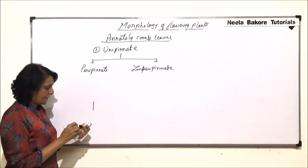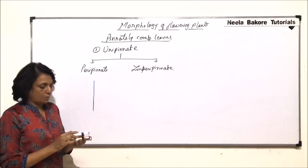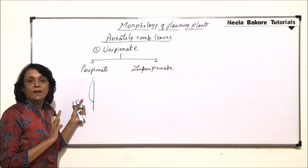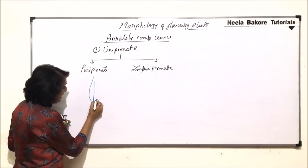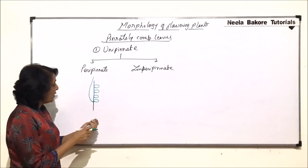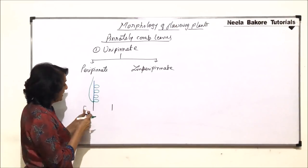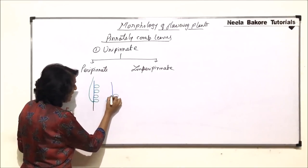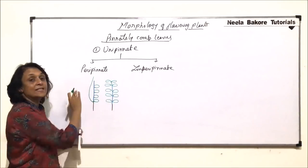So let us see — this is the petiole and this is the midrib. We will now start calling this midrib as the rachis. On one side I am drawing the normal complete leaf blade. The incision has taken place only once, and these are the leaflets. In case of paripinnate, we will see that the number of leaflets is even — that means the leaflets are always going to be in pairs. Then it is known as paripinnate.